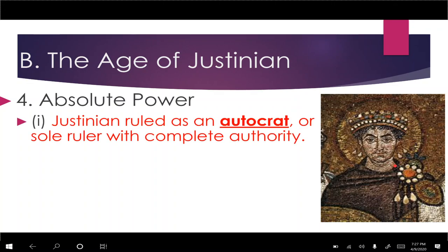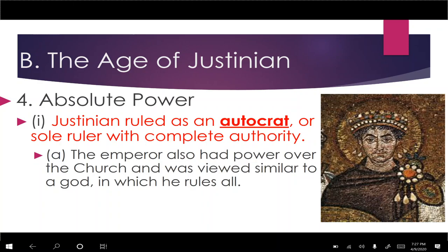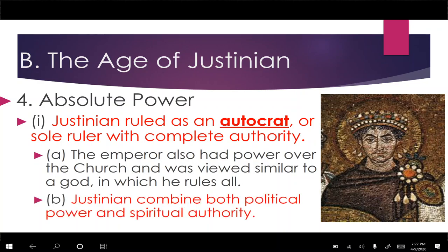Justinian ruled with absolute power — he's what we call an autocrat, one person who rules with supreme power. He placed himself in power not only over the government but also over the church, and was viewed almost like a deity — not God himself, but higher than normal people. He combines both political and spiritual authority, making him effectively a theocrat, ruling government and religion together. This would have made much more sense back then; today in America, we separate religion and government.